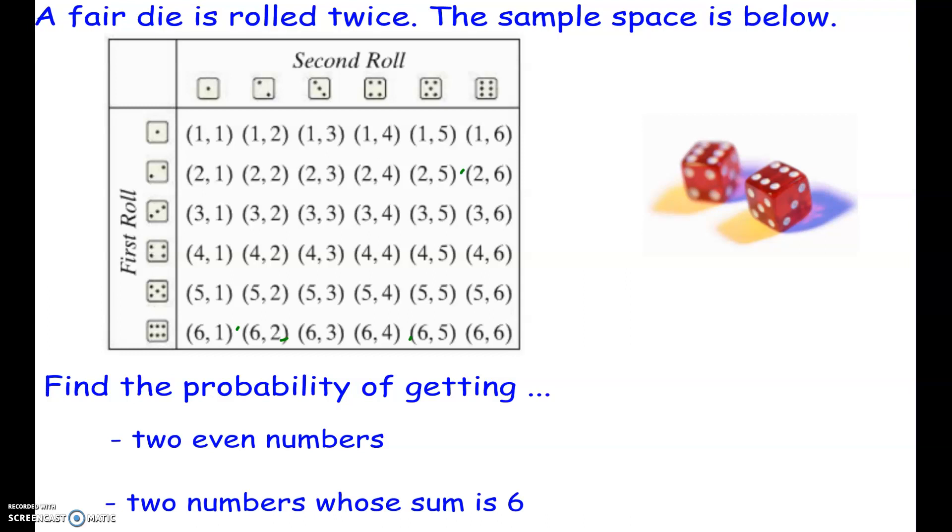In this example, we're looking at the probability involving rolling a die twice. So the first thing we want to look at is the sample space. What are the possible outcomes?